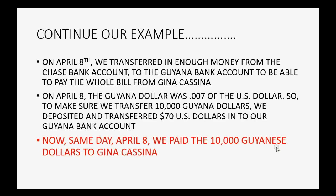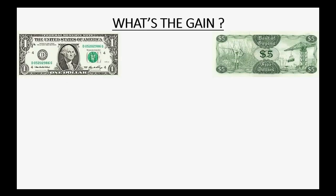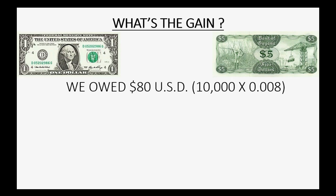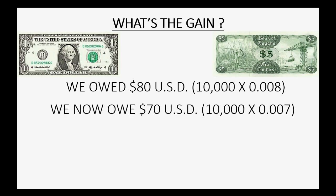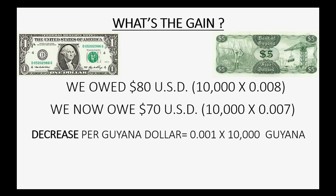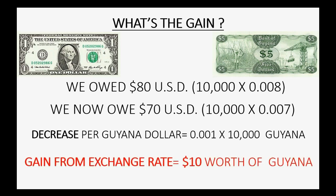On the same day, April 8th, we pay Gina the $10,000 Guyanese dollars we owe her. We originally owed $80 U.S. dollars because that was the value when we got the bill. But at the moment we pay, we only owe $70 U.S. dollars because the $10,000 Guyanese dollars are now worth only $70. The decrease per Guyanese dollar is $0.001, so we have a gain of $10 U.S. dollars — we owe $10 less as a result of the exchange gain.